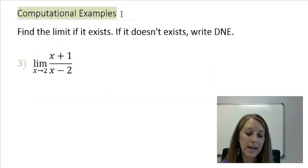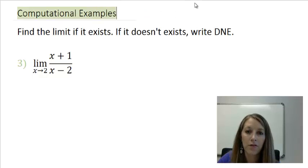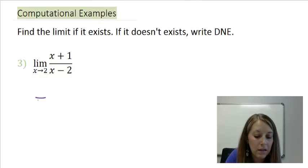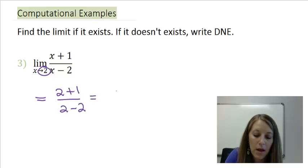Here we have the limit as x is approaching 2 of the function x plus 1 over x minus 2. The first step that we do in any limit computation is I substitute in for my x value. This gives me 2 plus 1 over 2 minus 2, that gives me 3 over 0.